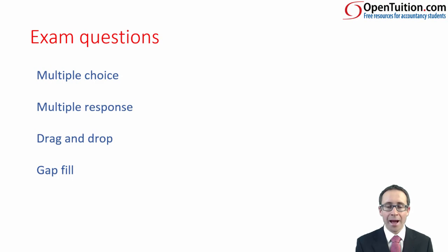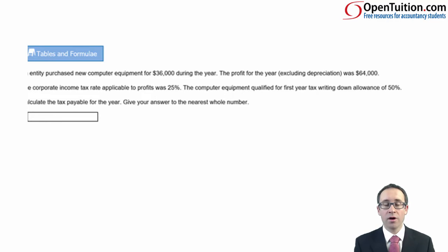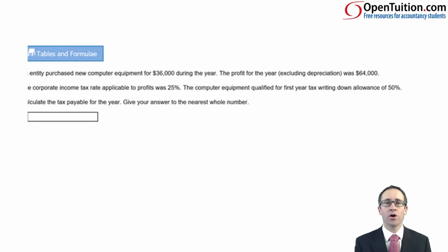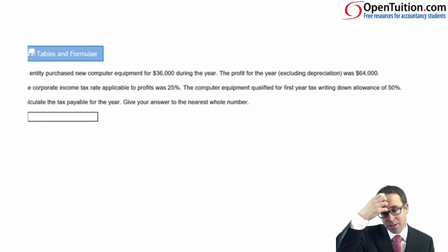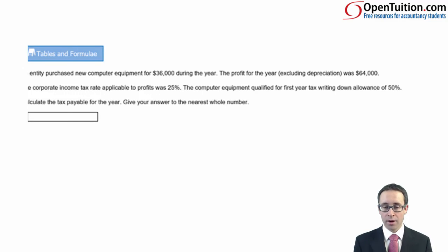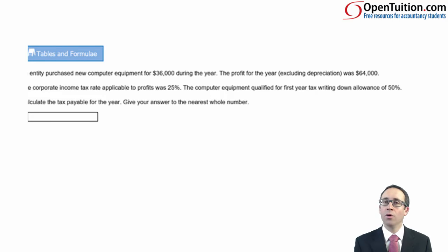As well as drag and drop, you also have filling the gaps — number entry where you fill in the blank. There's also the possibility of a sentence where a keyword is missing and you need to write in the correct word. This is an F1 question to do with tax where you enter a number. It specifically says to give your answer to the nearest whole number, and if you are working in thousands, remember to leave out the comma — just put it in as an absolute number with no comma or decimal points.